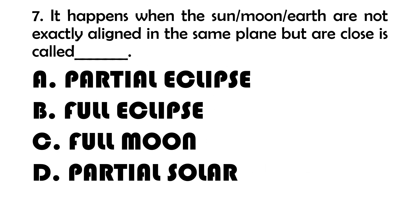Number 7. It happens when the sun, moon, and Earth are not exactly aligned in the same plane but are close — this is called blank. A. Partial Eclipse. B. Full Eclipse. C. Full Moon. D. Partial Solar.